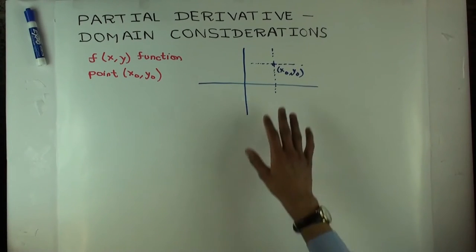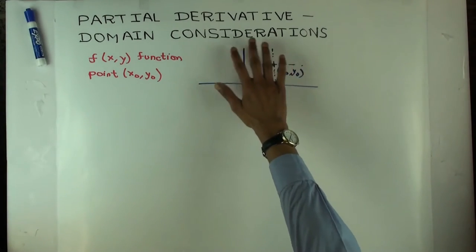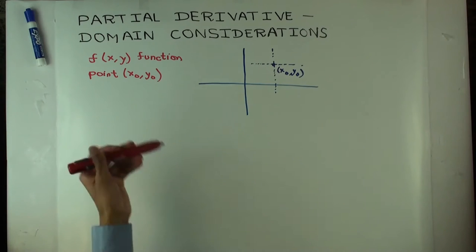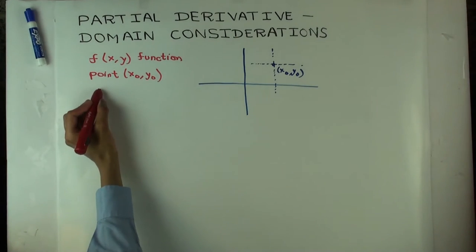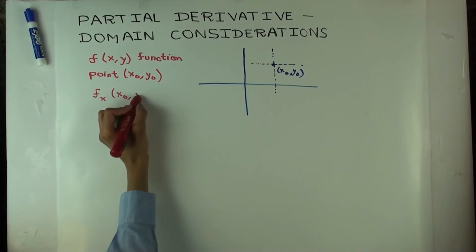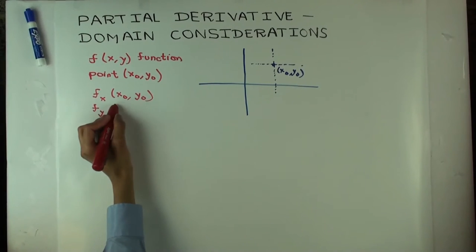In this talk I'm going to consider some issues related to the domain of definition of the partial derivative. The first thing I want to remind you of is that for partial derivatives you have two partial derivatives potentially: f sub x and f sub y.